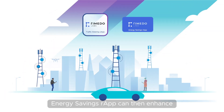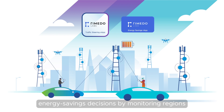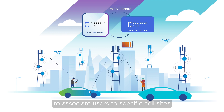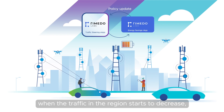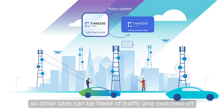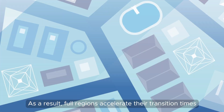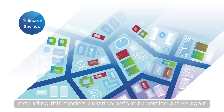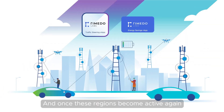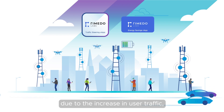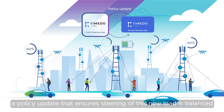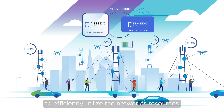The Energy Savings R-APP can then enhance energy savings decisions by monitoring regions and instructing Rometo Labs' Traffic Steering xApp to associate users to specific cell sites when the traffic in the region starts to decrease, so other sites can be freed of traffic and switched off. As a result, full regions accelerate their transition times to energy savings mode, extending this mode's duration before becoming active again. And once these regions become active again due to the increase in user traffic, the Traffic Steering xApp receives a policy update that ensures steering of this new load is balanced to efficiently utilize the network's resources.